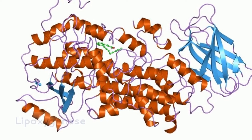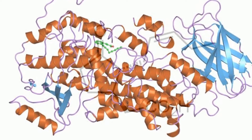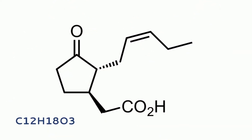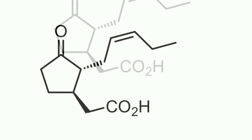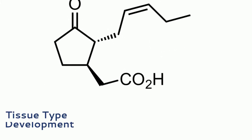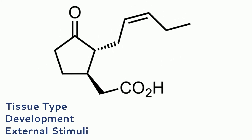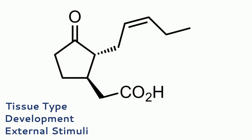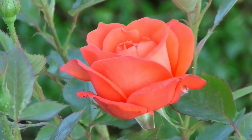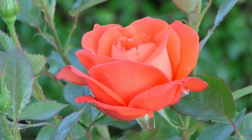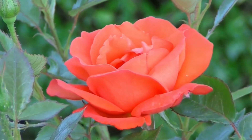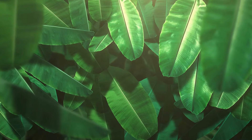The chemical formula of jasmonic acid is C12H18O3. The level of jasmonic acid in plant tissues varies as a function of tissue type, development, and external stimuli. The highest levels of jasmonic acids or JAME are reported in flowers and reproductive tissues, whereas much lower levels are found in roots and mature leaves.